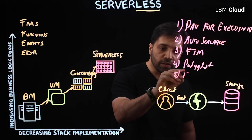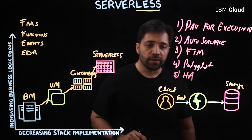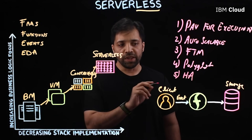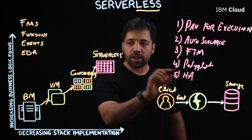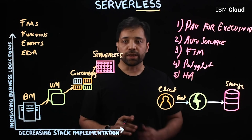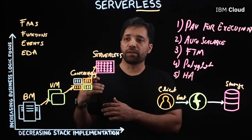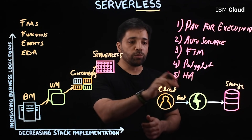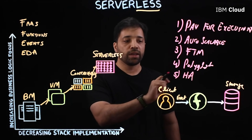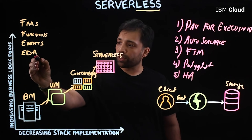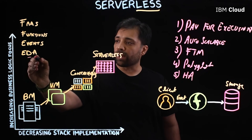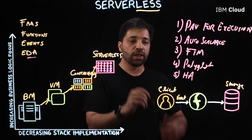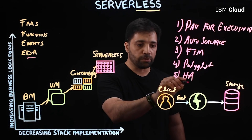Last but not least, all serverless apps are highly available. The cloud provider takes care of all the fault tolerance and the MZRs — multi-zone regions — that they build to make sure your app is always up and running. All the services that you're using in the event-driven architecture are also fault-tolerant, so your app overall is always highly available.